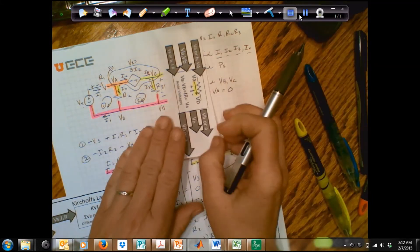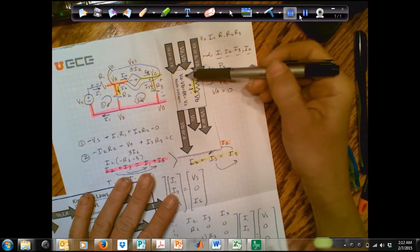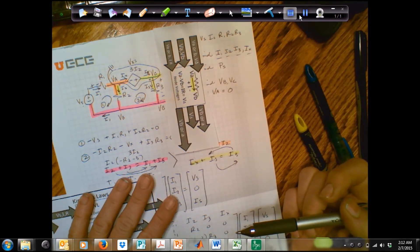The way we did that is we lined up this picture with the current, and we were able to write these equations VA minus VB is equal to IR.